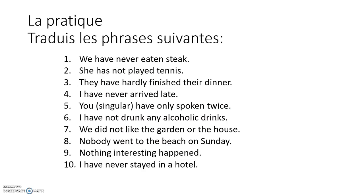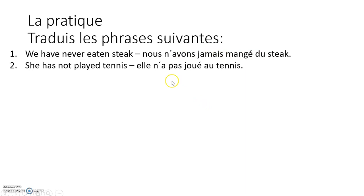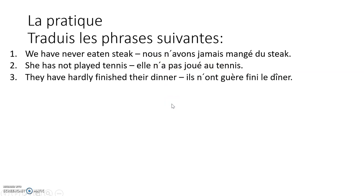La pratique — traduisez les phrases suivantes. We've got ten phrases here using what we've just gone through. Have a go, and then we'll go through the answers. Okay: 'We've never eaten steak' — nous n'avons jamais mangé du steak, with jamais around the auxiliary verb. 'She has not played tennis' — elle n'a pas joué au tennis, with ne and pas around the auxiliary. 'They have hardly finished their dinner' — ils n'ont guère fini le dîner, with ne and guère around the auxiliary.